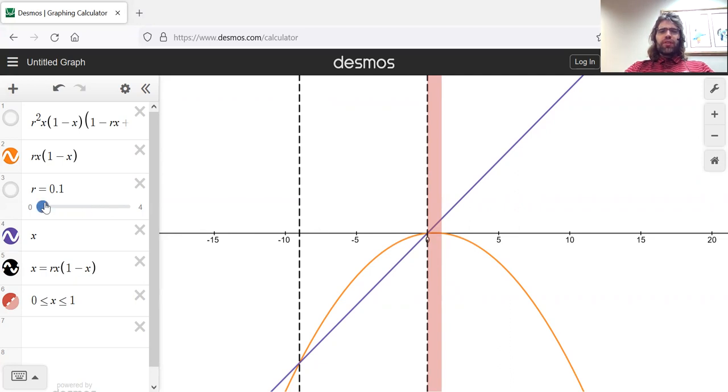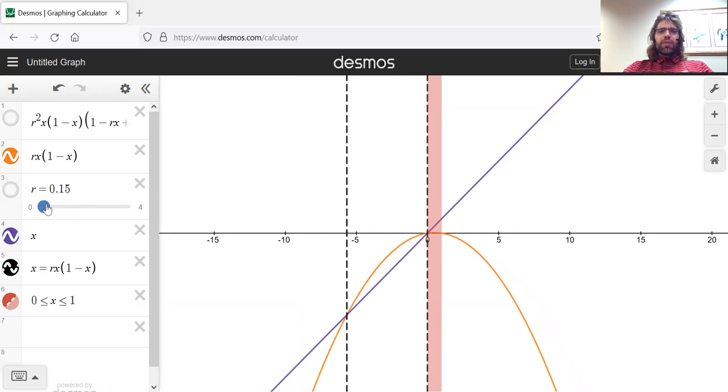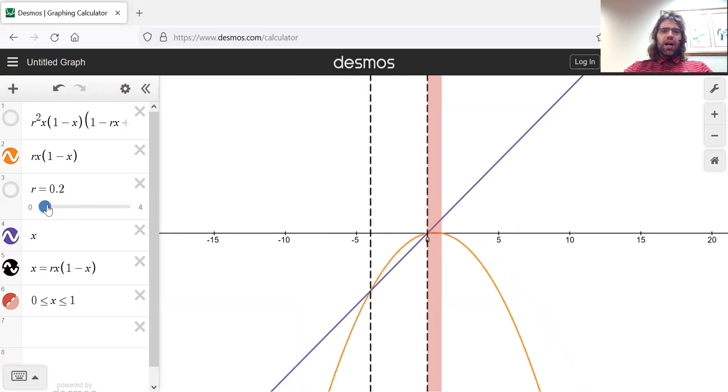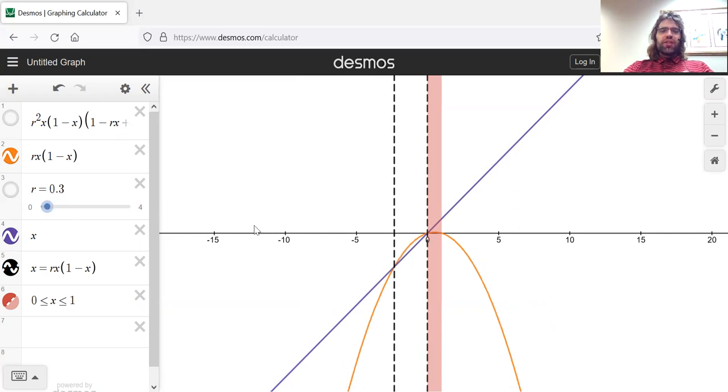So let's see what happens as R increases. Currently, R is close to zero. We have two fixed points, but only one of them is relevant to us. As we increase R, trying to do this gradually, we see that this fixed point over here is going from left to right. The fixed point over at zero is staying put.